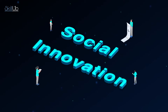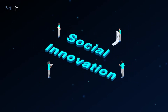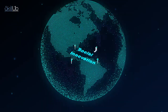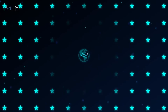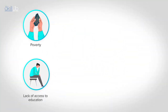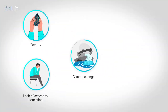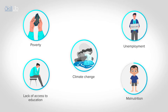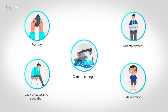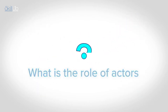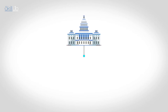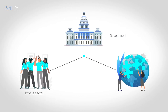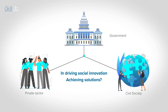Social innovation is important in giving us novel and effective solutions to pressing problems plaguing the world, like poverty, lack of access to education, climate change, unemployment and malnutrition. What is the role of actors like the government, the private sector and the civil society groups in driving social innovation and achieving solutions?